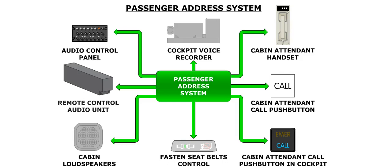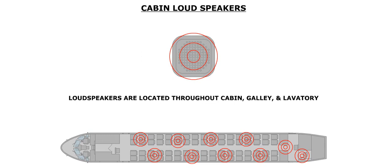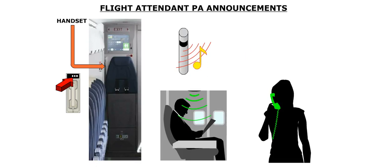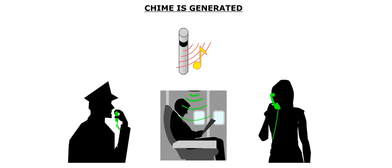The flight and cabin crew can make passenger announcements via the passenger address, or PA system. Whether through the flight attendant station or the flight deck, all PA calls are amplified through loudspeakers located in the cabin, galley, and lavatory. In the flight deck, PAs made by the flight attendants can be heard by selecting the PA volume control knob. PAs from the flight deck are made by selecting the PA transmission key and using one of the push-to-talk buttons. The flight attendant can make announcements with the handset by depressing the PA push button above the handset cradle. The PA system generates a single chime in the cabin.